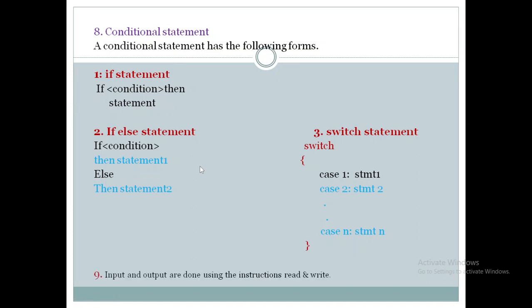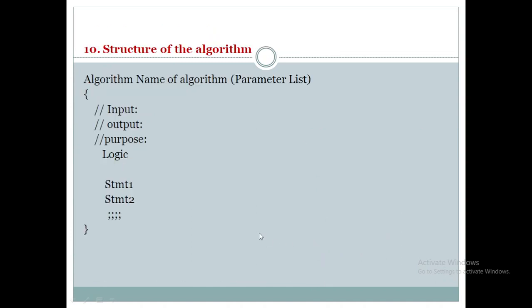The ninth convention covers input and output: use the keyword 'read' to read data from the keyboard and 'write' to output data to the screen. Finally, the overall structure of an algorithm starts with the keyword 'algorithm', followed by the name, parameter list, comments for input, output, and purpose, and then the logic as a collection of statements, closed with a bracket.